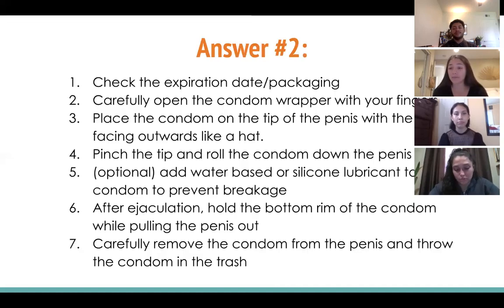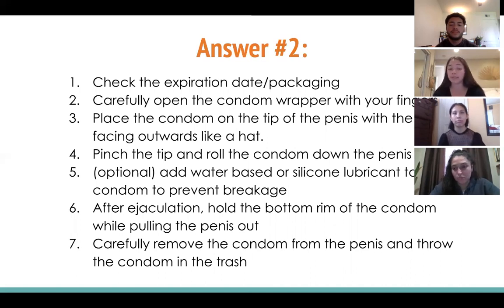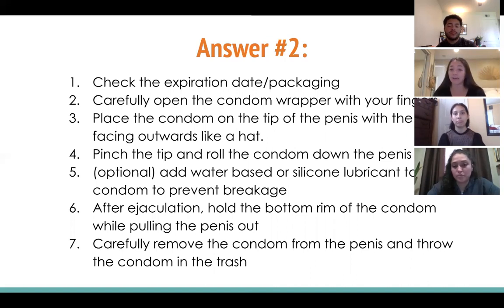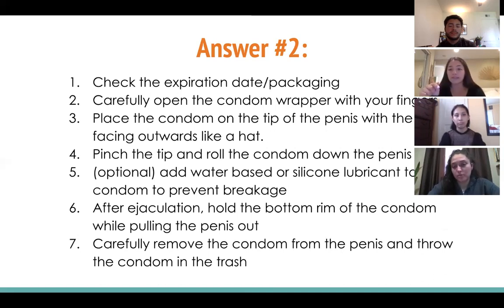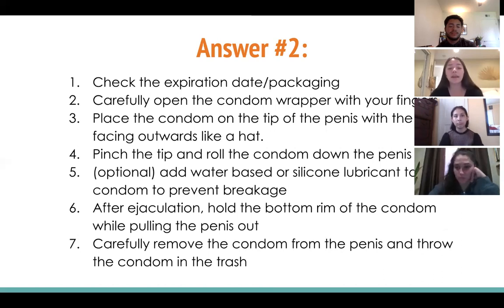Here are the seven steps recap: step one, check the expiration date and packaging for rips or tears; step two, carefully open the wrapper with your fingers — not scissors or teeth; step three, place the condom on the tip of the penis with the rim facing outwards like a hat, with the rim around like the brim; make sure it doesn't go on inside out.